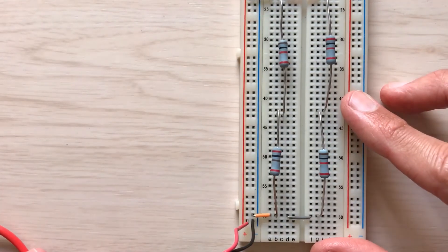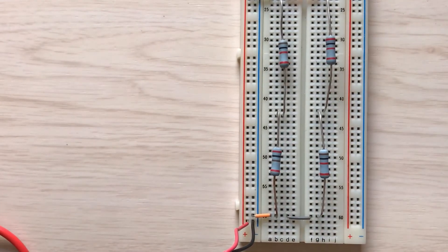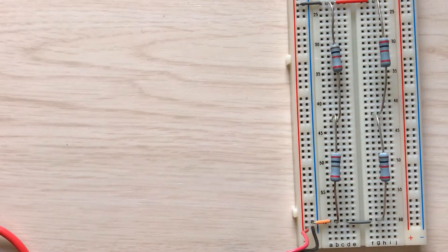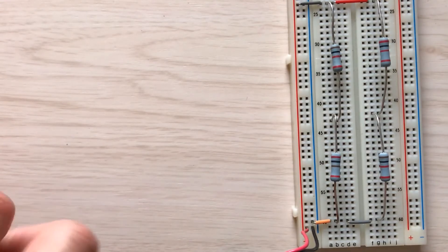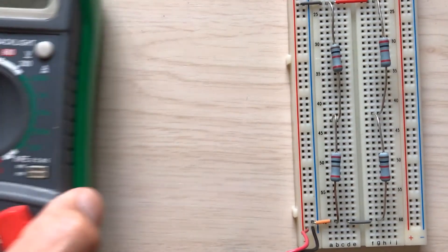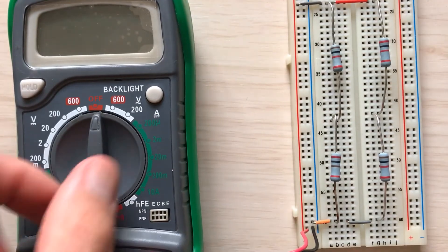So what I want to measure is the voltage drop between these two nodes. I'm going to use a multimeter for that. This is my multimeter.